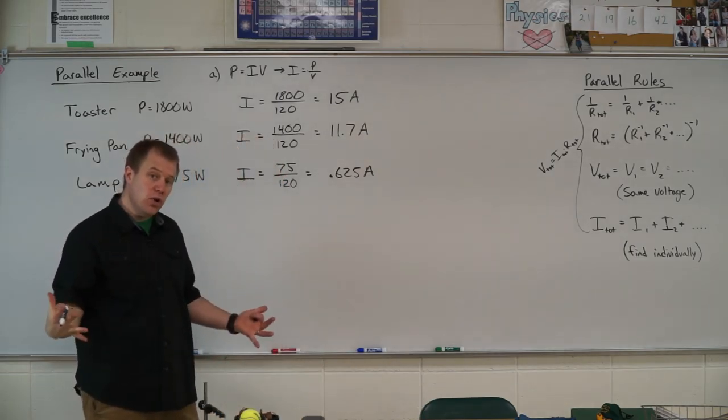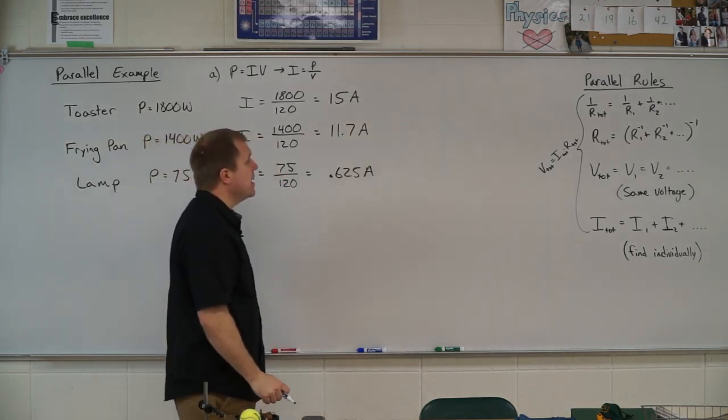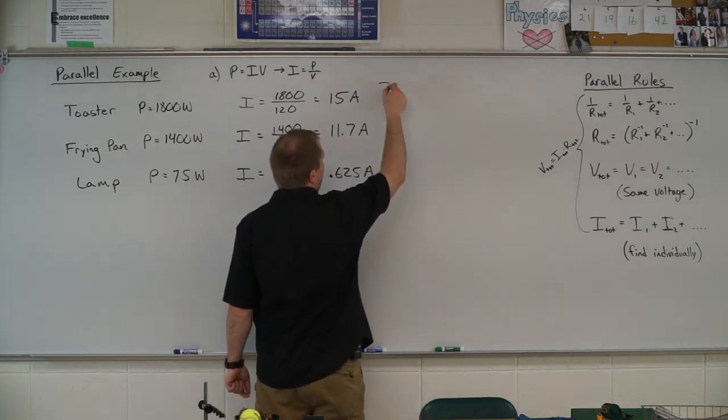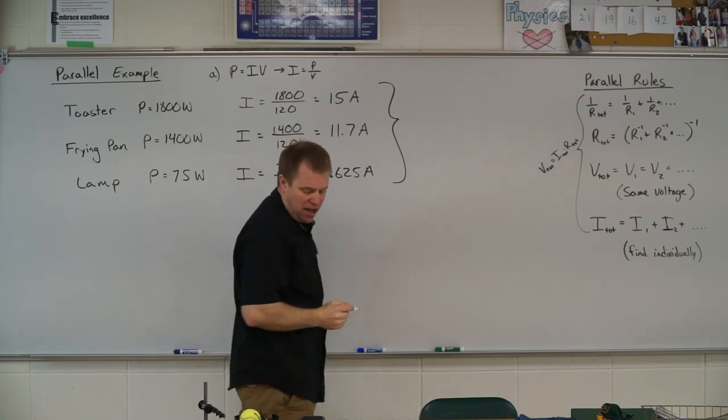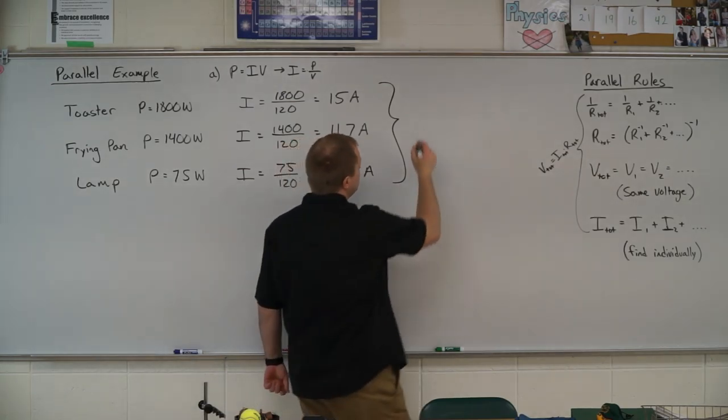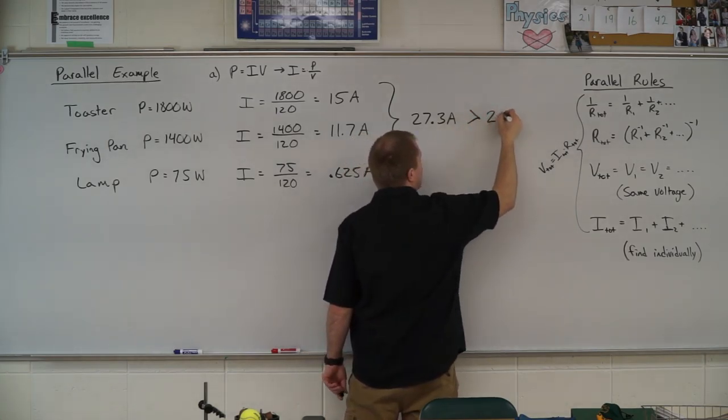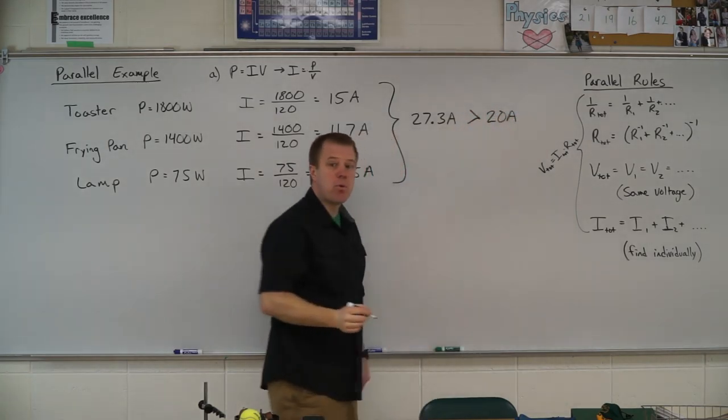Now the total current is going to be the sum of the individual currents. If I add all of these up, I get a total current of 27.3 amps, which is larger than my 20 amp breaker.